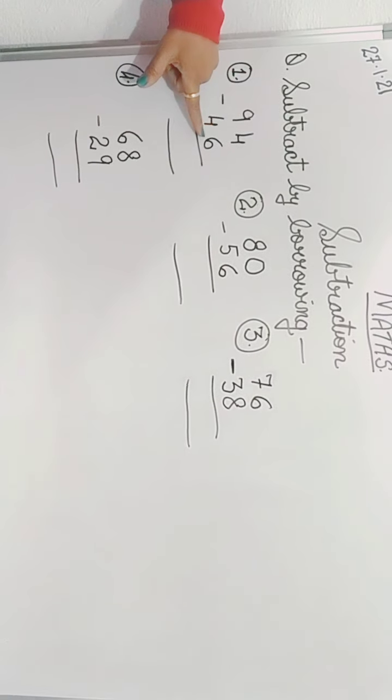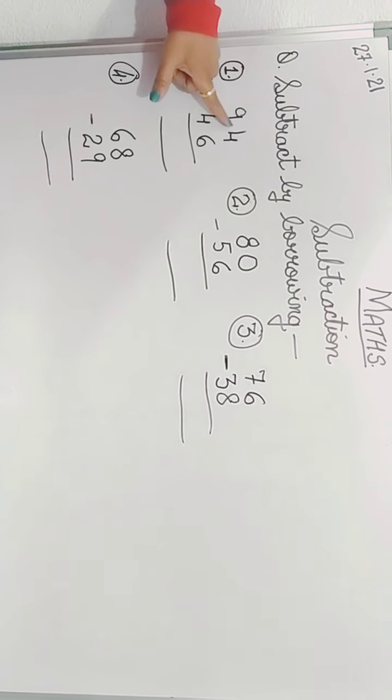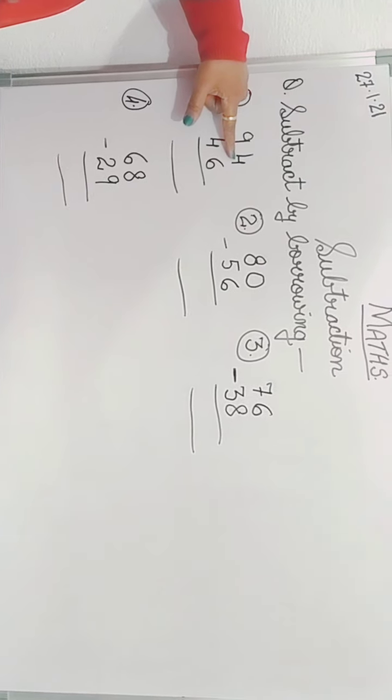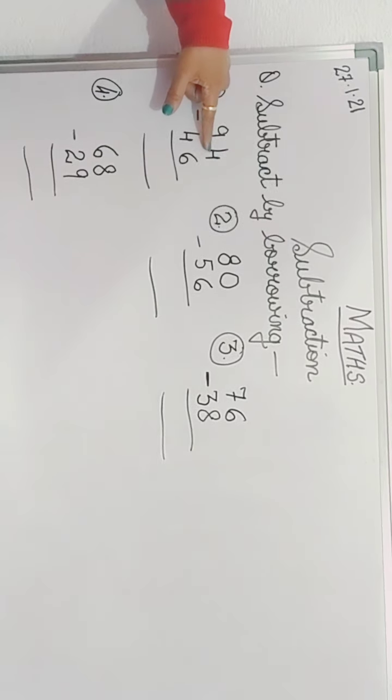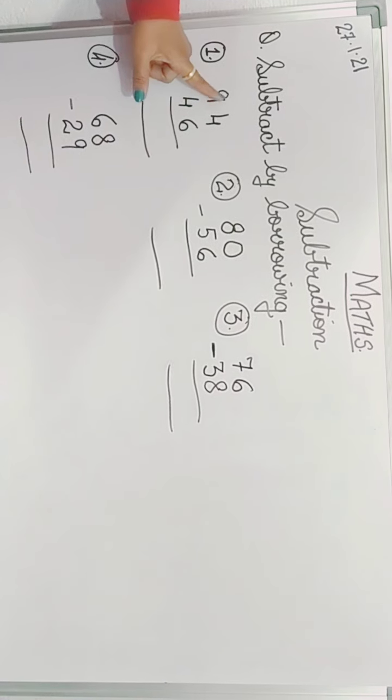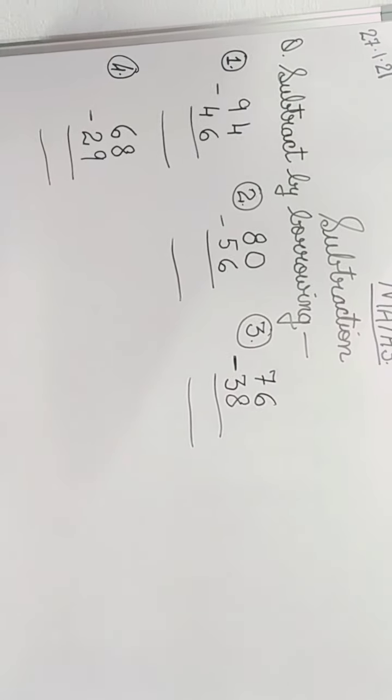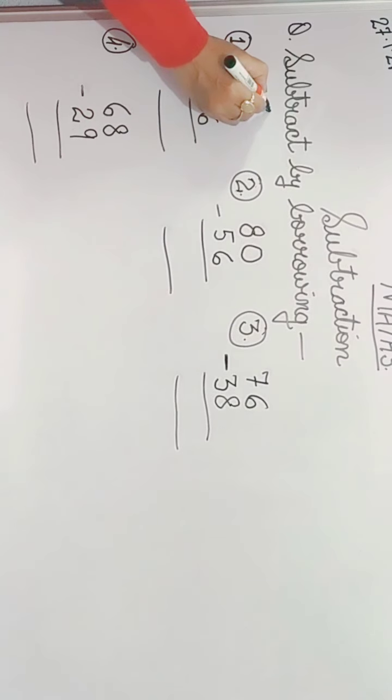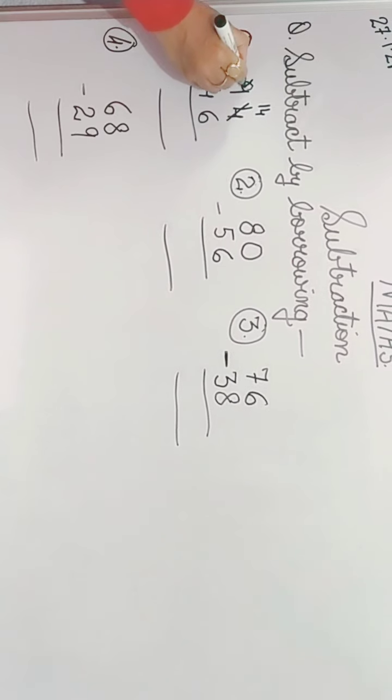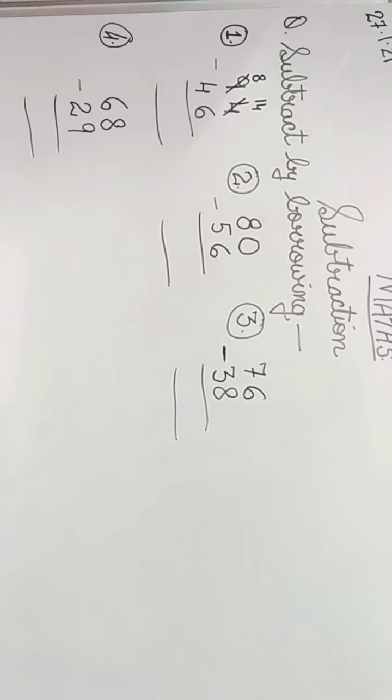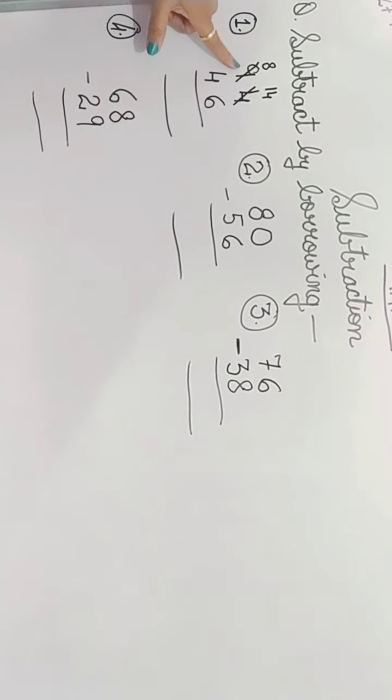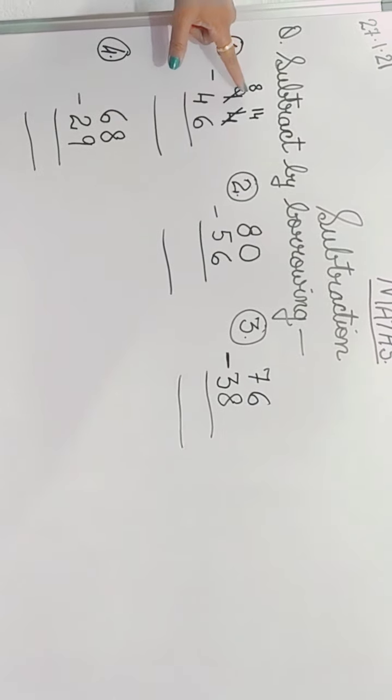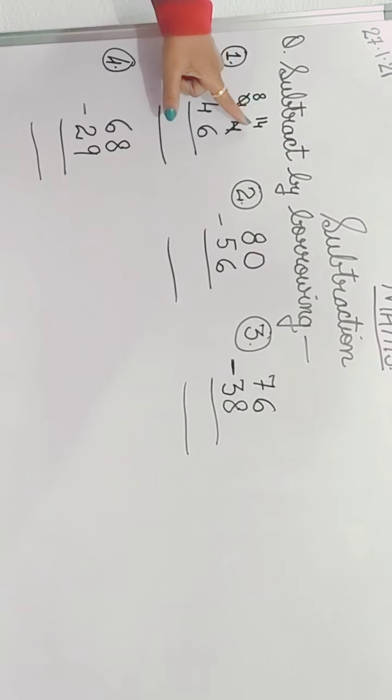First we have to do from the ones. This line is tens and this is ones. So first we will subtract the ones. Now see, 6 is bigger number and 4 is smaller number. So we cannot minus 6 from 4. So we will borrow one number from 9. When we borrow one number from 9, we will cut 4 and write here 14. And 1 इस में से माइनस हो जाएगा, so this becomes 8. ठीक है ना? जिससे आपके पास 9 टॉफी है, if someone takes 1 toffee, how many will remain? 8. So here you will minus 1 because 9 has given 1 number to 4, so this 4 has become 14.